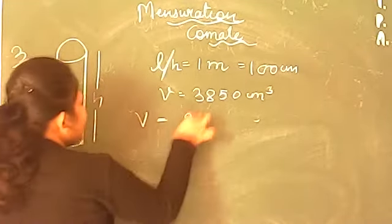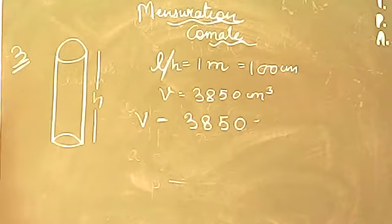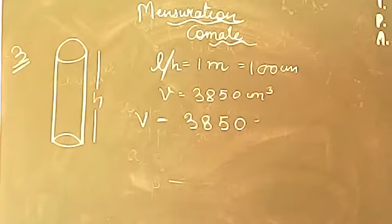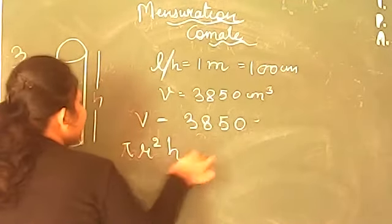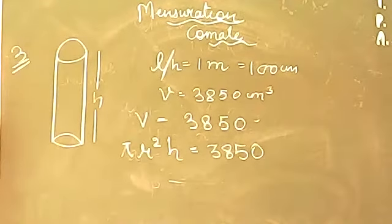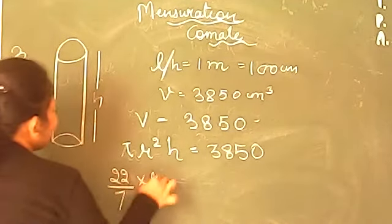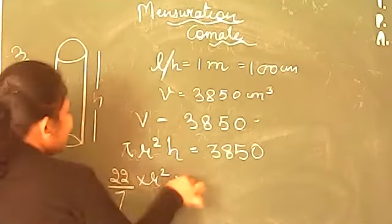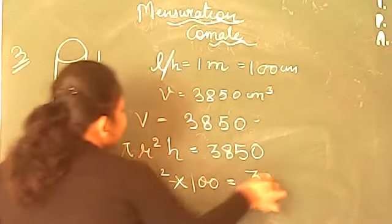What is the formula for finding the volume of a circular pipe? As done in the previous question, the formula is π r² h. So we write: π r² h = 3850. Substituting: 22/7 × r² × 100 = 3850. Pi means 22/7, r² is unknown, and h = 100.